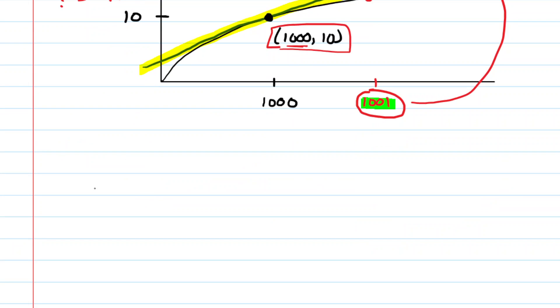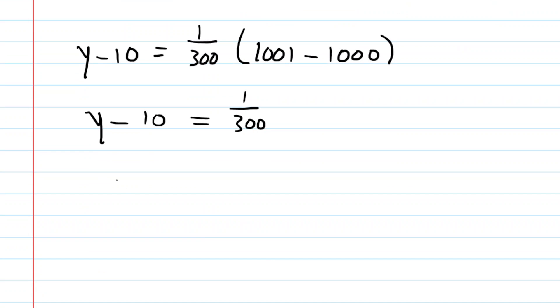So here we go. We're going to have y minus 10 equals 1 over 300, and then we're plugging in 1,001 at long last minus 1,000. In the parentheses, you'll see that that's just equal to 1. So you have 1 over 300 times 1, which is 1 over 300. And then finally, just add 10 to both sides, you get 1 over 300 plus 10 over 1. We'll find a common denominator, multiply top and bottom here by 300.